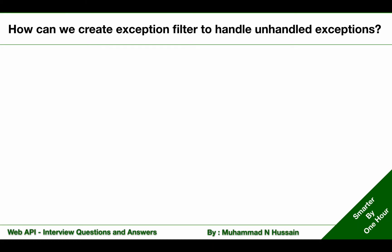How can we create an exception filter to handle unhandled exceptions? In previous videos I have explained that in the filters namespace we have interfaces and classes which we can use to create custom filters. To create a custom exception filter we can use IExceptionFilter or ExceptionFilterAttribute class available in the filters namespace.